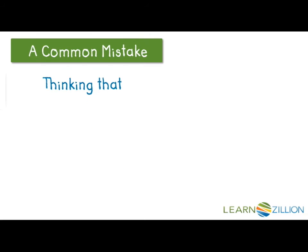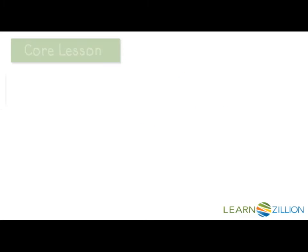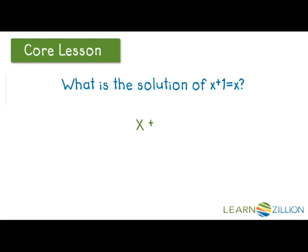A common mistake is thinking that your math is wrong if both sides of the equation are not equal. What is the solution for x plus 1 equals x? To solve this equation, I'm going to subtract x from both sides, and I'm left with 1 is equal to 0. We know this cannot be true, so our equation has no solution.